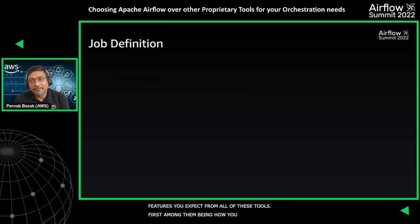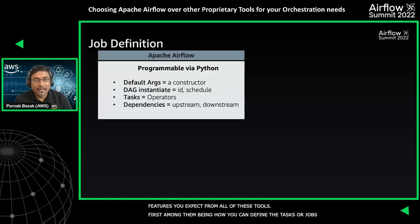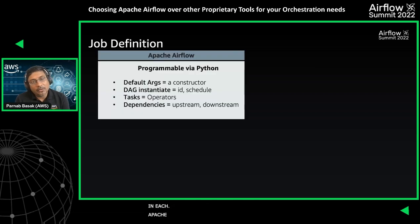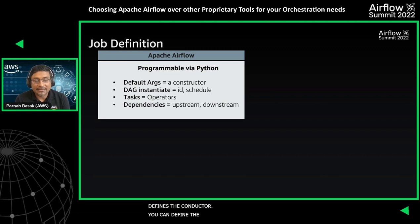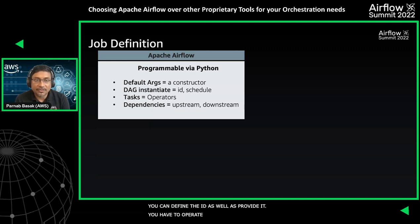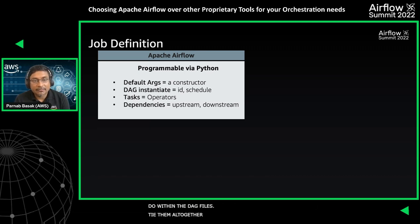Let's discuss differences in how you define tasks or jobs in each tool. In Apache Airflow, you write a DAG — a Directed Acyclic Graph — as a Python file. It contains default arguments defining the DAG ID and schedule, operators or tasks containing the core logic, and upstream/downstream dependency definitions that establish the order of task execution.